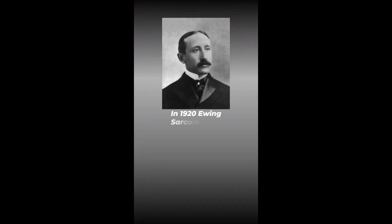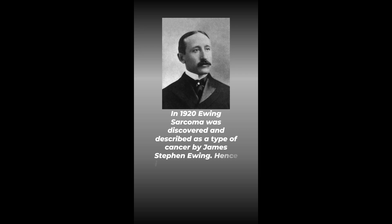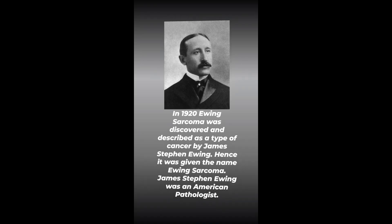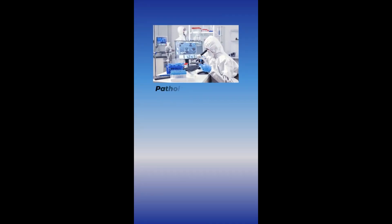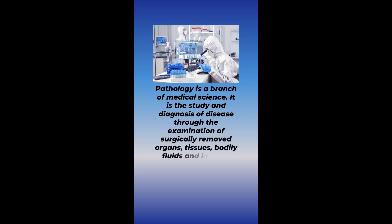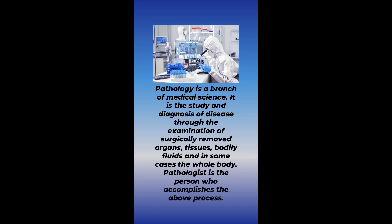In 1920, Ewing sarcoma was discovered and described as a type of cancer by James Stephen Ewing, hence it was given the name Ewing sarcoma. James Stephen Ewing was an American pathologist. Pathology is a branch of medical science — the study and diagnosis of disease through the examination of surgically removed organs, tissues, bodily fluids, and in some cases the whole body. A pathologist is the person who accomplishes this process.